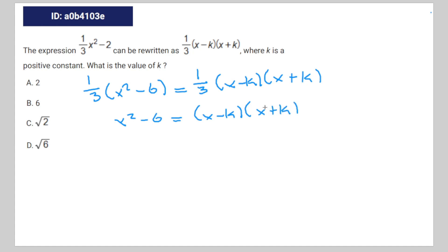There's only one instance in this entire quadratic equation where you can get a constant. That's going to be the interaction between negative k and k, and there's only one constant on this side of the equation, which is negative six.